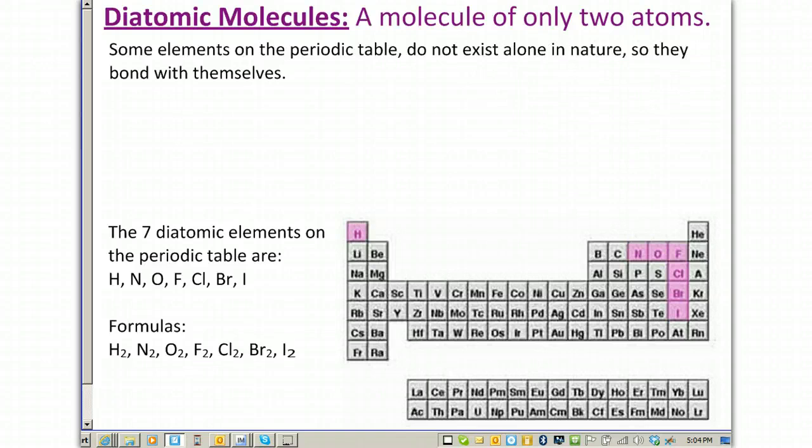Those elements are going to be hydrogen, nitrogen, oxygen, fluorine, chlorine, bromine, and iodine. So, their formulas are going to be as follows: H2, never just H. It has to be H2. Instead of just N, we have N2. Instead of just O, it's O2. Instead of F, F2, Cl2, Br2, and I2. Notice on the periodic table, they're highlighted in pink, the diatomic elements.